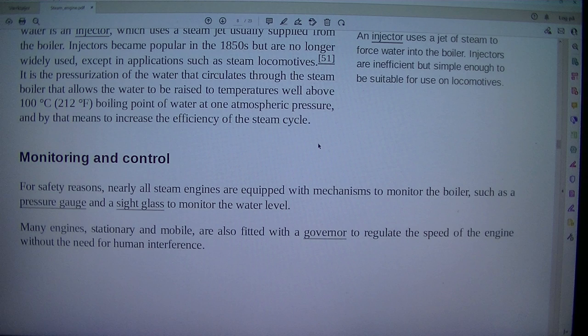It is the pressurization of the water that circulates through the steam boiler that allows the water to be raised to temperatures well above 100 degrees C, 212 degrees Fahrenheit, boiling point of water at one atmospheric pressure, and by that means to increase the efficiency of the steam cycle.